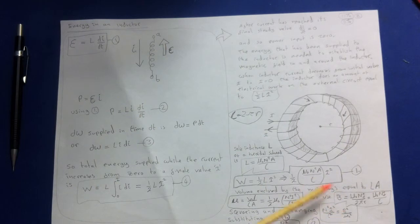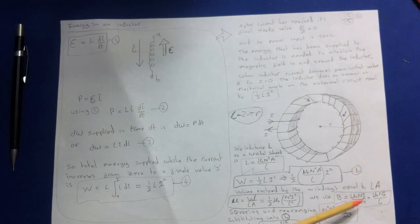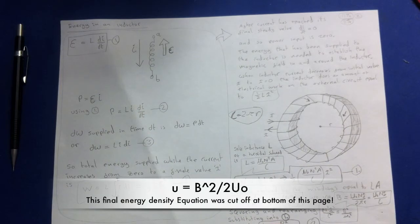This equation is what we end up with after manipulating this and this. We end up with the energy density for an inductor, which is the energy per unit volume, is equal to the magnetic field squared over 2 permeability naught.